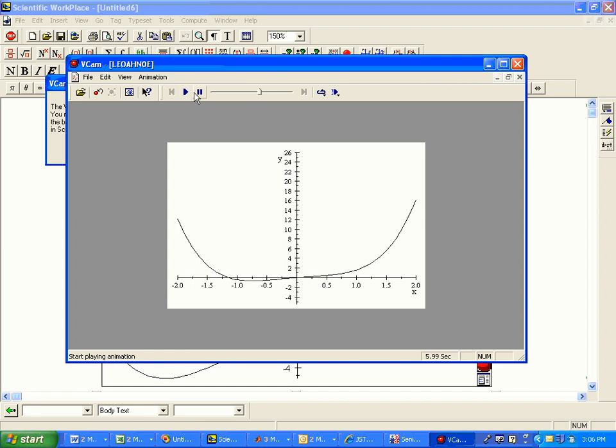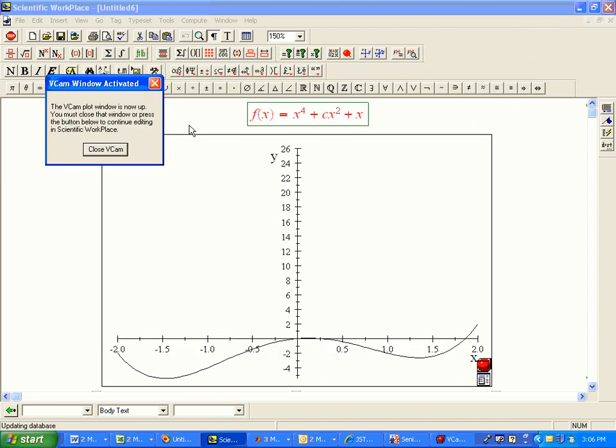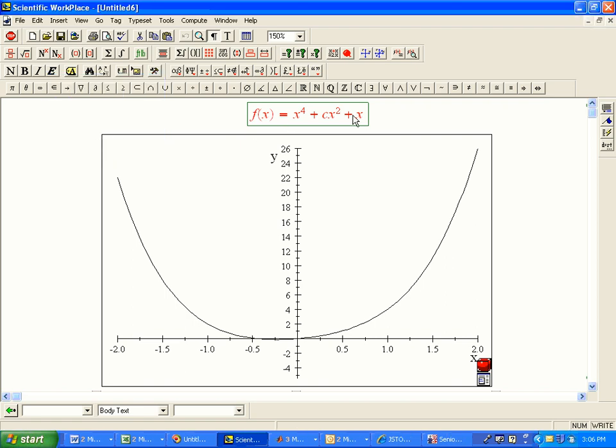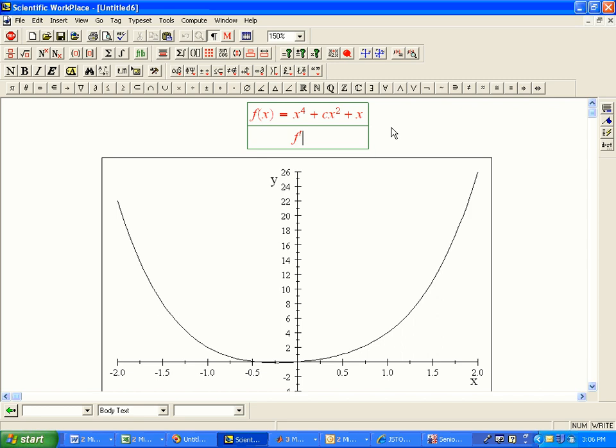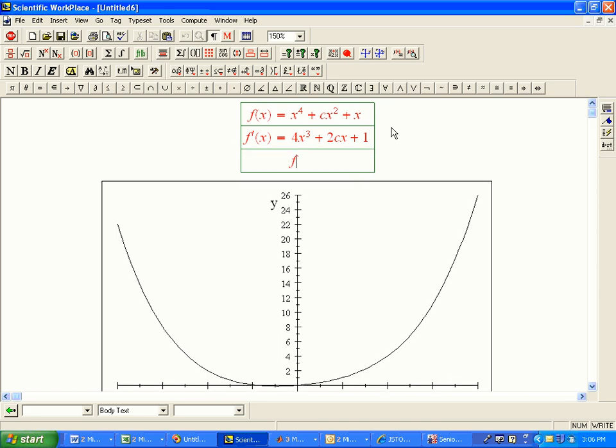The first thing they ask in this analysis is where in this movie do the inflection points disappear, basically. You can try and do that by trial and error, but this is definitely a point where you want to go to the actual analysis. So let's go ahead and calculate f prime of x. That's 4x cubed plus 2cx plus 1. f double prime of x, if we're interested in inflection points, that's 12x squared plus 2c.